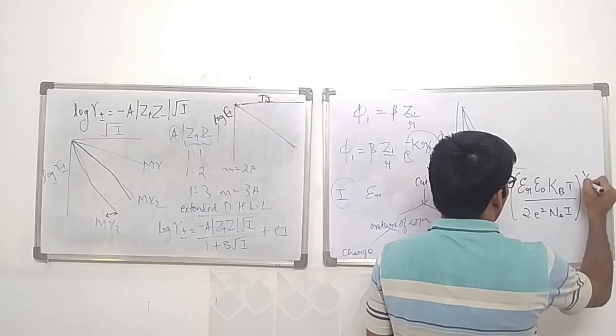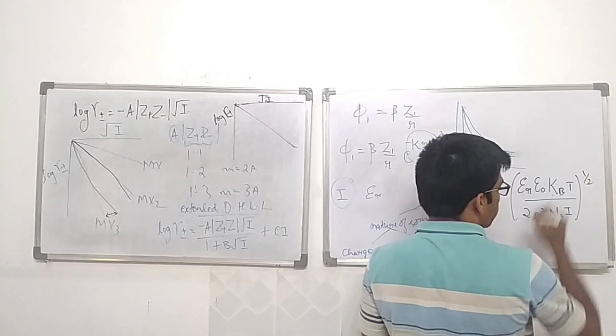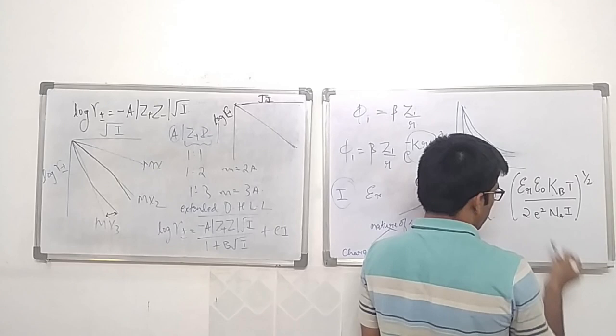In this formula, εᵣ is the permittivity of the solution, ε₀ is the permittivity in vacuum, k_B is the Boltzmann constant, T is the temperature, I is the ionic strength, N_A is Avogadro's number, and e is the charge on one electron.